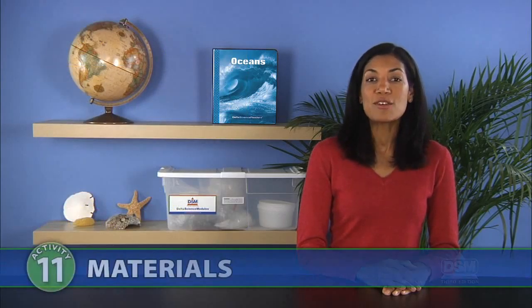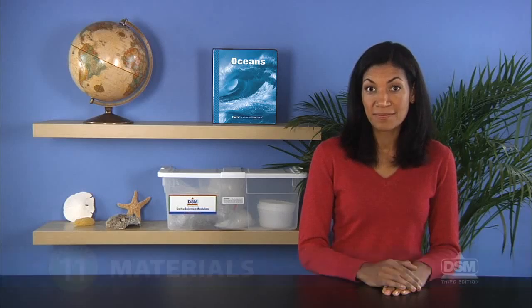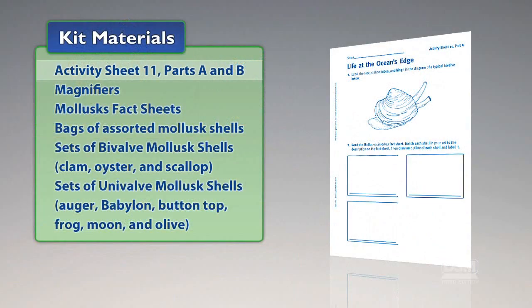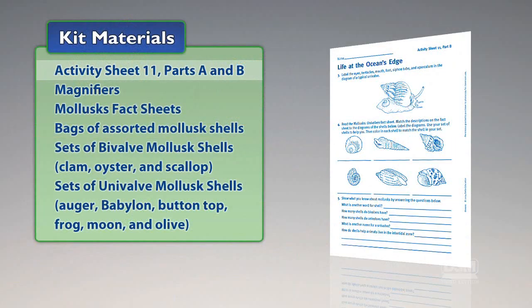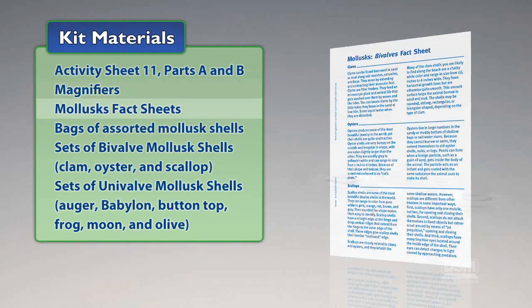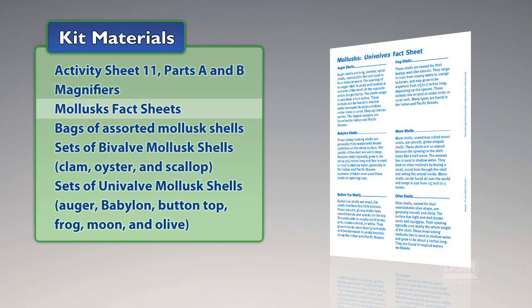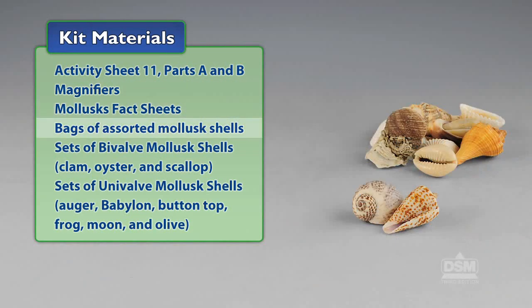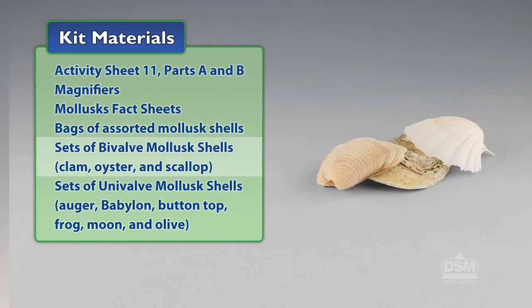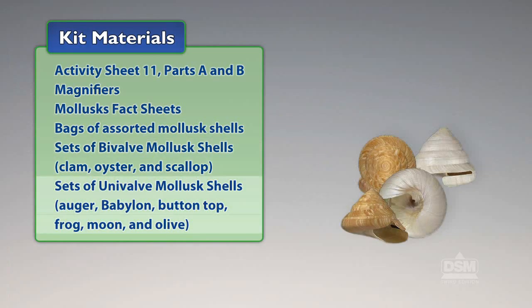You will need the following materials from the kit: Activity Sheet 11, Parts A and B, magnifiers, mollusks fact sheets, bags of assorted mollusk shells, sets of bivalve mollusk shells including clam, oyster, and scallop, and sets of univalve mollusk shells including auger, babylon, button top, frog, moon, and olive.